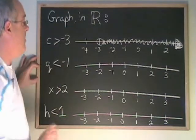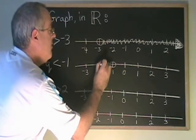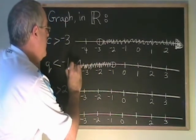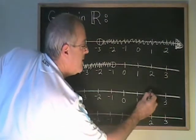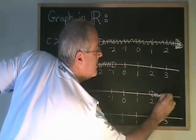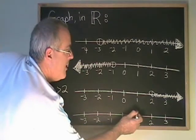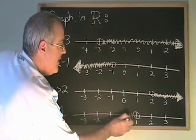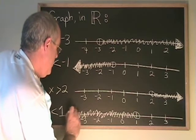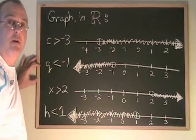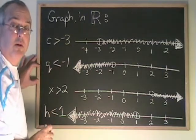Q less than negative 1: negative 1 is not less than itself, so it's not part of the answer. We put an open circle, then shade all the numbers less than it and put an arrow showing it goes on forever in the negative direction. X greater than 2: 2 is not part of the answer, but all the numbers to the right of 2 are — we put our arrow. H less than 1: 1 is not part of the answer. We put the open circle, then shade all of the numbers to the left of 1 and put our arrow. This is how you graph inequalities in real numbers that do not have the extra line meaning or equal to.